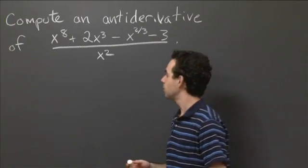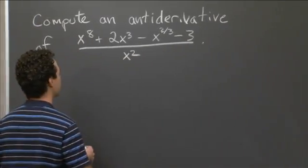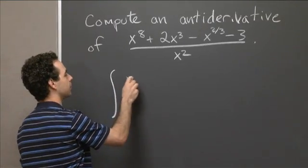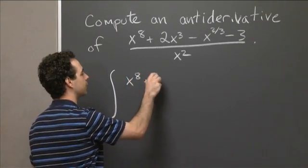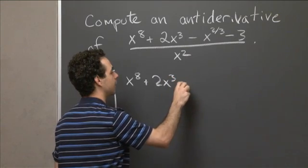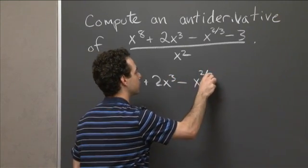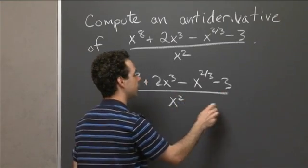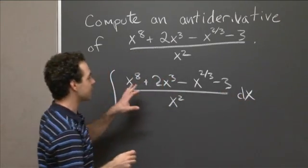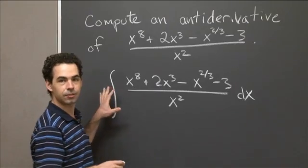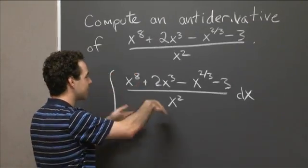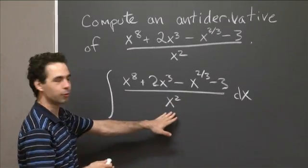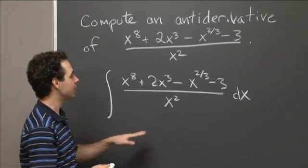So for example, x to the eighth over x squared is just x to the sixth. So this antiderivative that I'm interested in: antiderivative of x to the eighth plus 2x cubed minus x to the 2 thirds minus 3 over x squared dx. I've written this in a silly form. You can get it in a nicer form if you just realize that this is just a sum of powers of x that I've sort of put over this silly common denominator here.